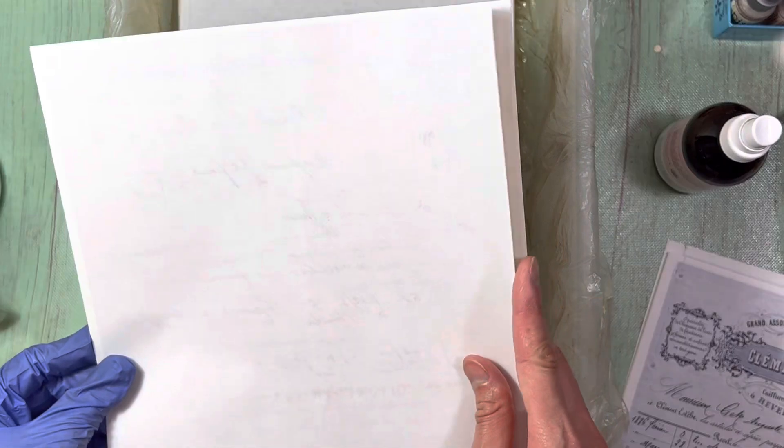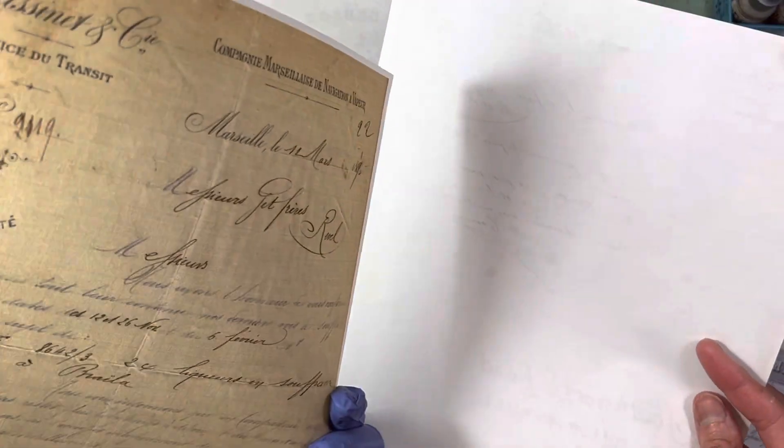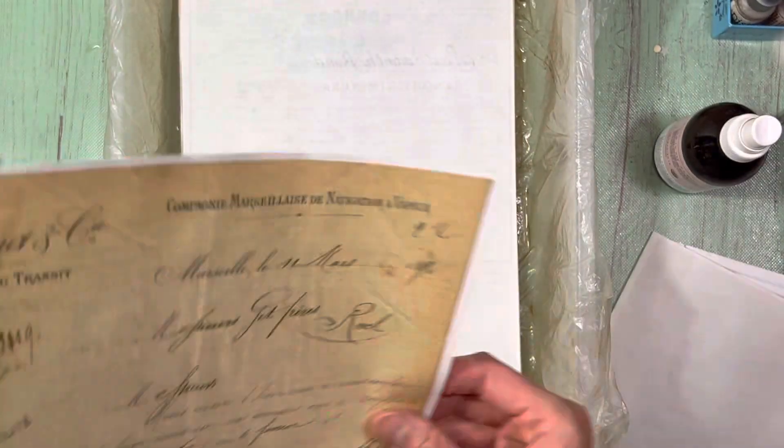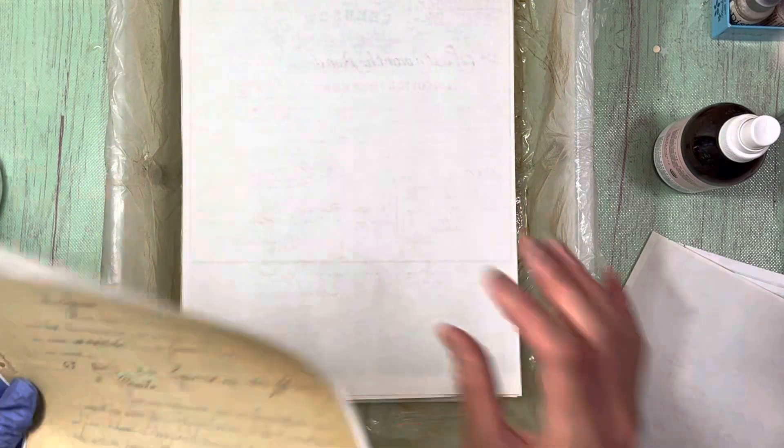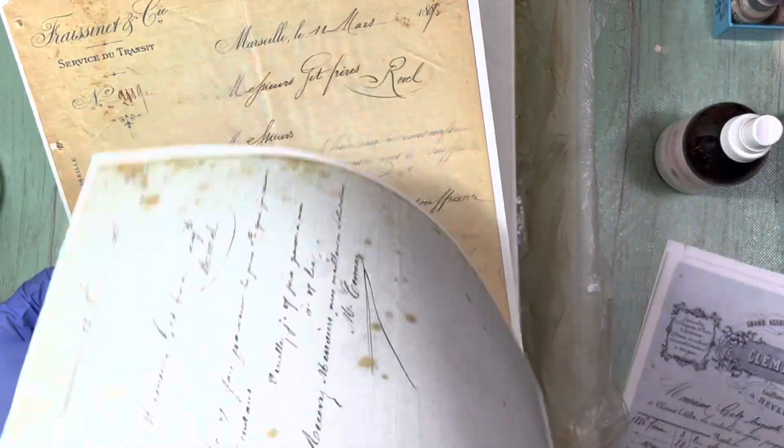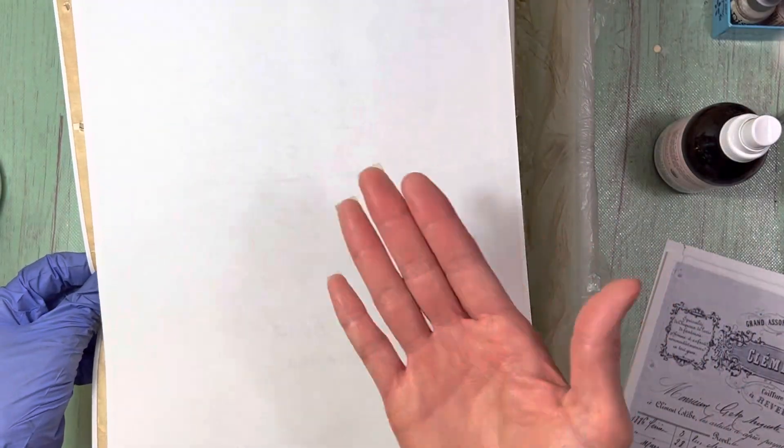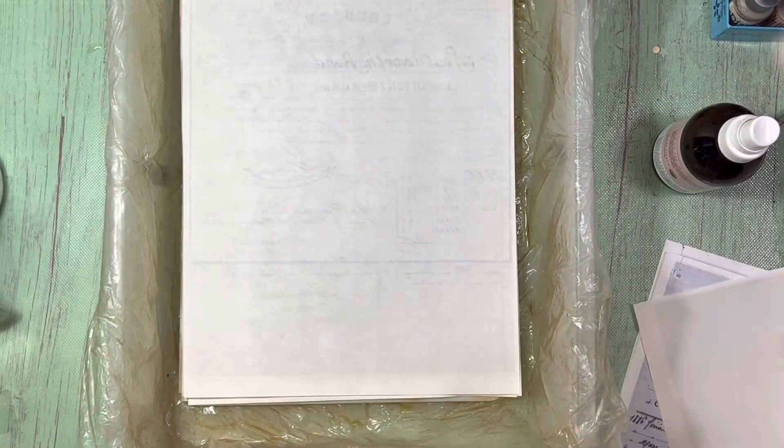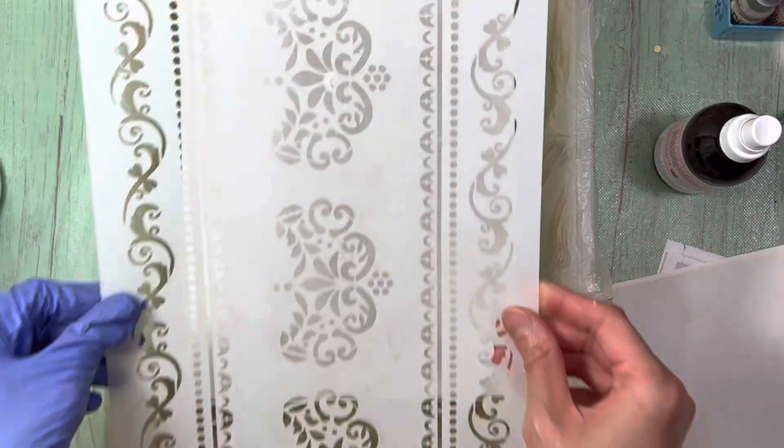All right. So to speed this up, I'm just going to get this next sandwich ready. So this side is going to be going down on top of the stencil. And this one is going to be ready for the next set.